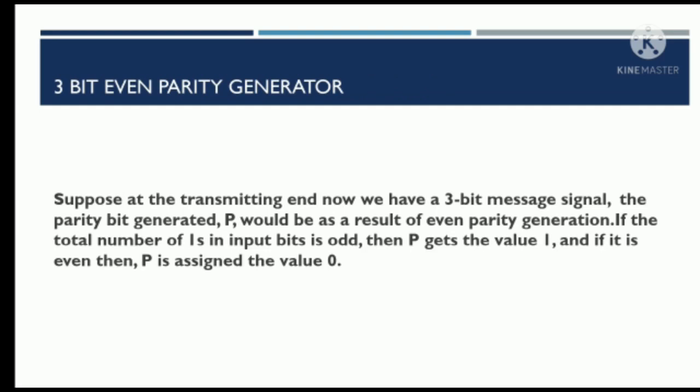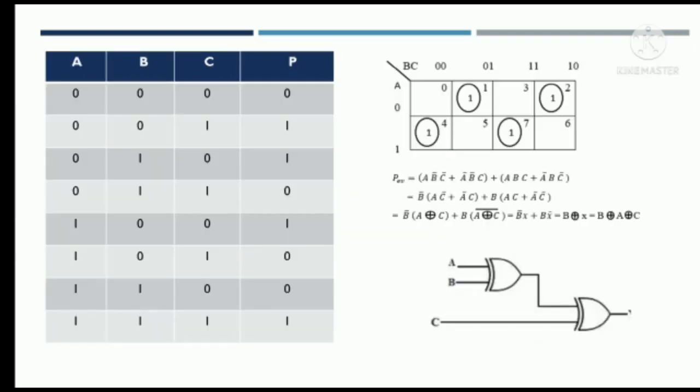We will now study the 3-bit even parity generator. Suppose we need to transmit a 3-bit message signal from the transmitter's end to the receiver's end. Let P be the parity bit generated using even parity. If the number of ones is even, P is set to 0; otherwise it is set to 1. In the table, A, B, C are the inputs and P is the parity bit. When all values are 0, P is 0 because the number of ones is zero, which is even.